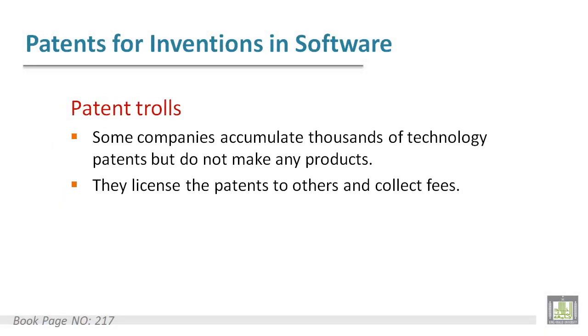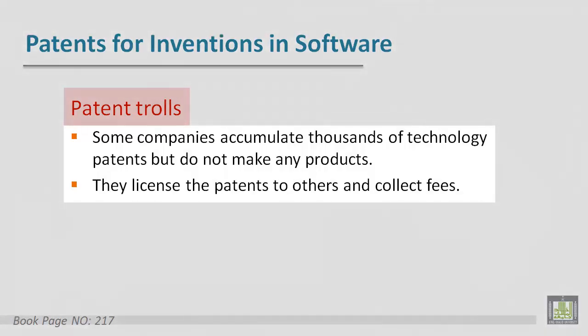Now we're going to talk about patent licensing firms. These firms or companies accumulate thousands of technology patents but do not make any product. They license the patents to others and collect fees. Some patent licensing firms make all or a significant part of their income by suing other companies for patent infringement, for hardware as well as software.